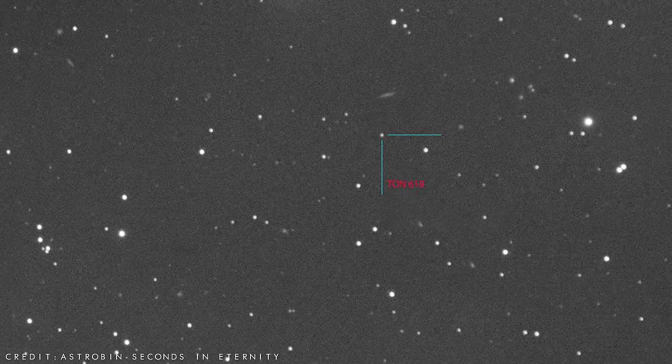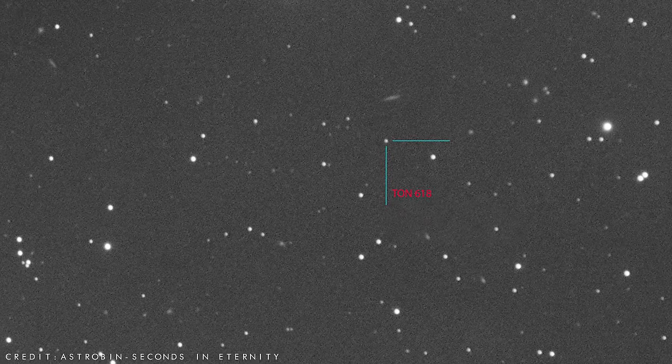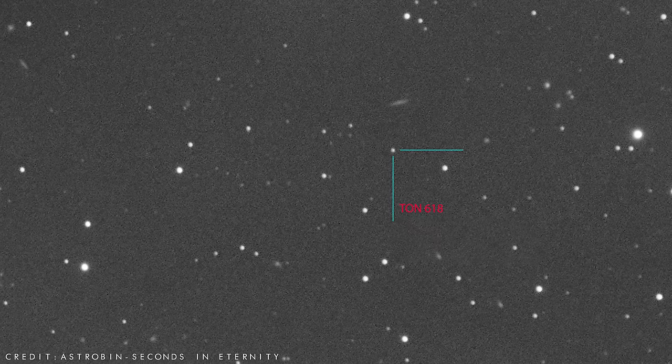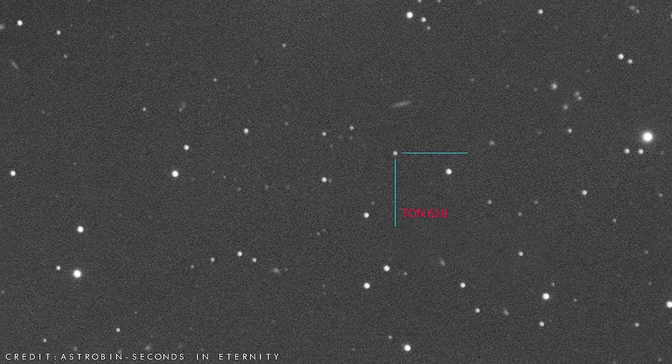TUN 618 is estimated to be more than 10 billion light years away in the constellation of Canis Venatici, and the only reason we have detected it is because it is so bright.